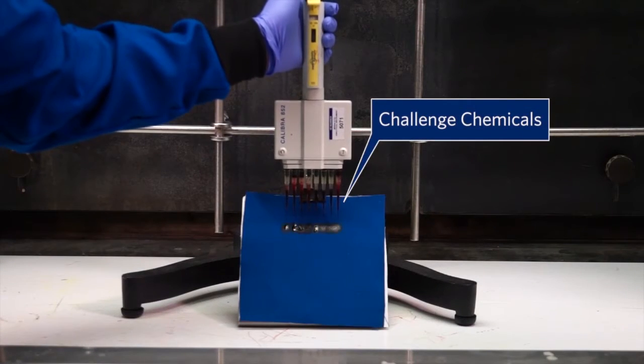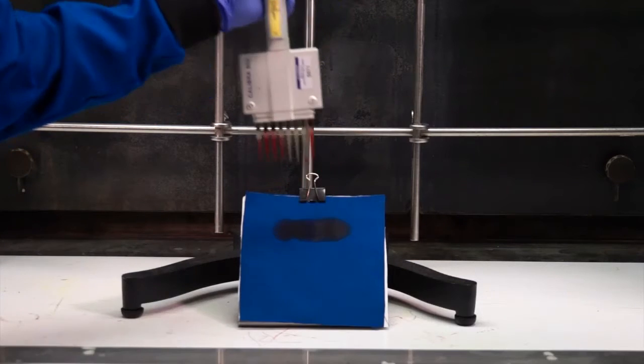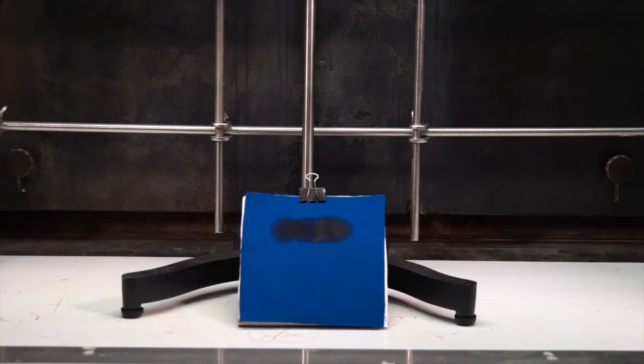So what you see here is exposure of common laboratory solvents—water, isopropanol, ethanol, DMSO, DMF, methanol, acetonitrile, and toluene—to a standard lab coat material.